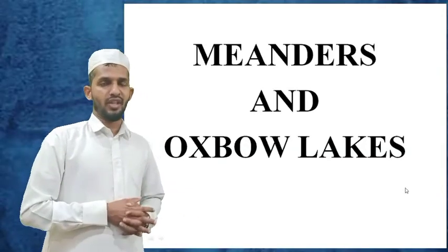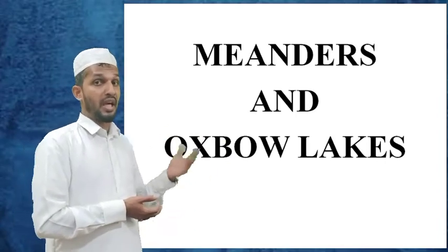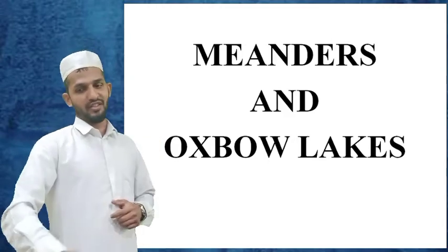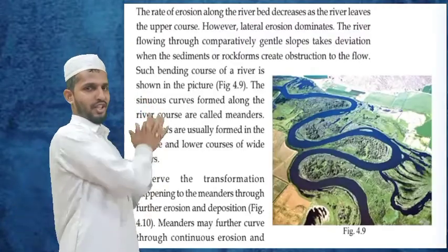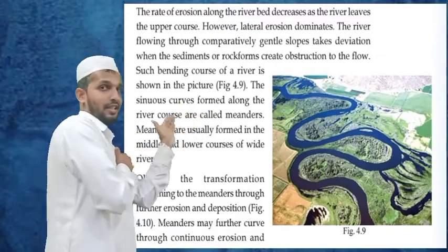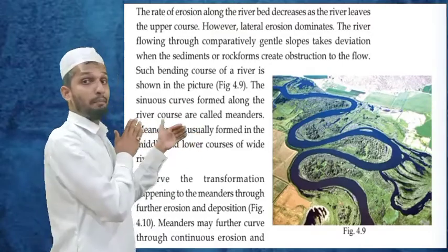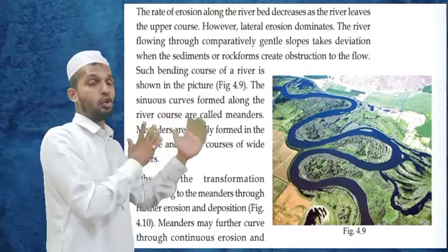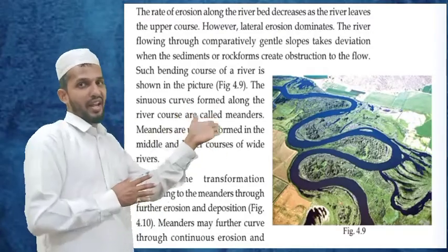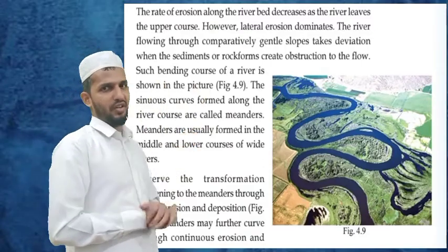In the fourth chapter we are going to study about meanders and oxbow lakes. Can you see a picture there? Like a snake is going like this? That is not a snake — that is a river flowing in the middle course. The river flows in the middle course, okay.